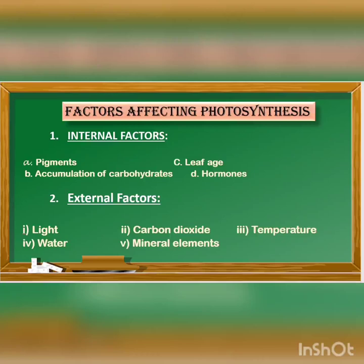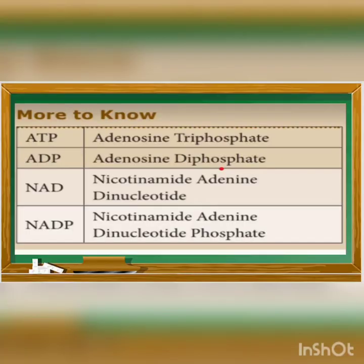The factors affecting photosynthesis include internal factors such as pigments, leaf age, accumulation of carbohydrate, and hormones, as well as external factors such as light, carbon dioxide, temperature, and water. There are four important abbreviations you must know thoroughly: ATP, ADP, NAD, and NADP.